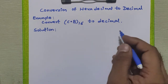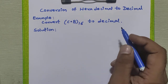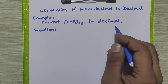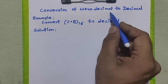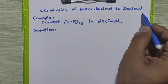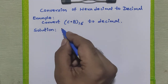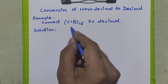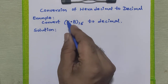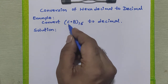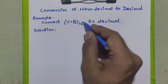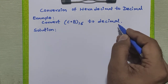Hello friends, in this tutorial we are going to study how to convert any hexadecimal number to decimal number. Consider this example given to us: we want to convert C point B in hexadecimal to the decimal number system.